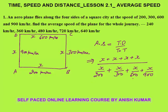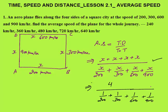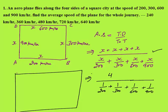Now if you solve this you get the final answer, but this process seems a bit complicated — most aptitude books solve it this way with the x method. However, I will show you the easiest method. Notice that x cancels out, so we're left with 4 divided by (1/200 + 1/300 + 1/600 + 1/900). Since x has no importance here, I will use the assumption method.